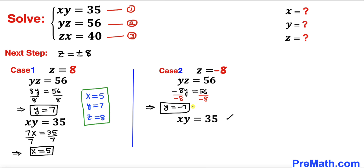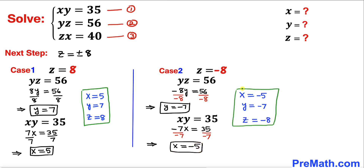Now let's focus on equation 1 and plug in y equals negative 7. That gives us negative 7x equals 35. Dividing both sides by negative 7, our x value turns out to be negative 5. So for case 2, x equals negative 5, y equals negative 7, and z equals negative 8.